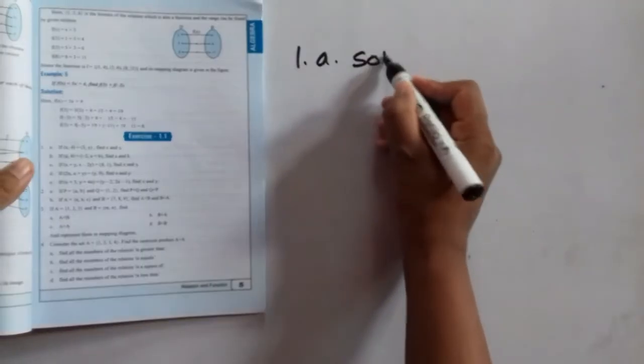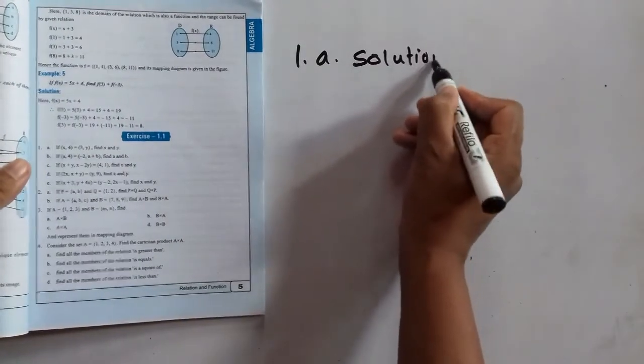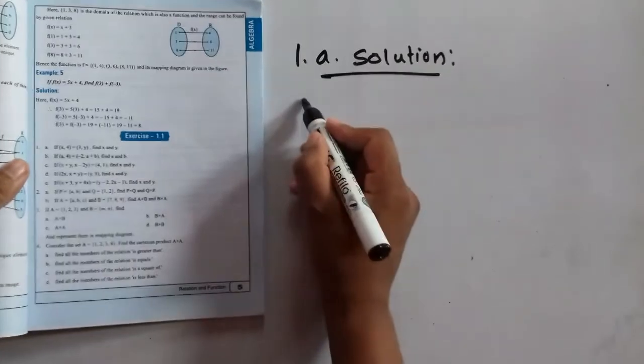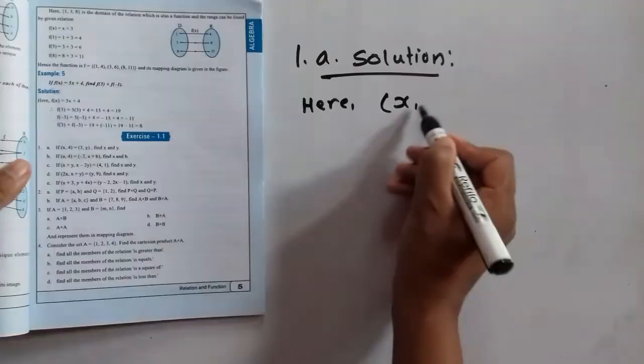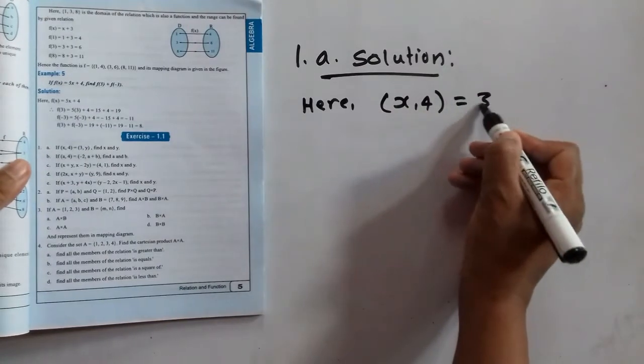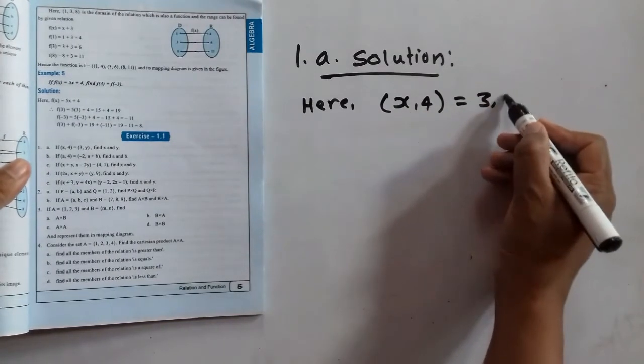Question number 1A. So this is the solution. Here, (x, 4) = (3, y).